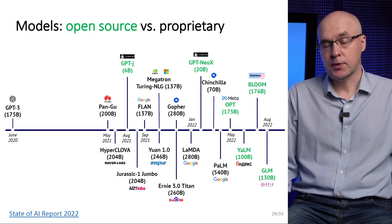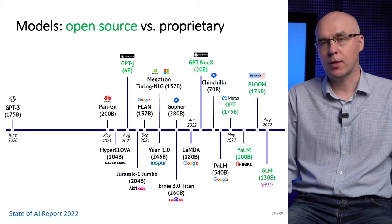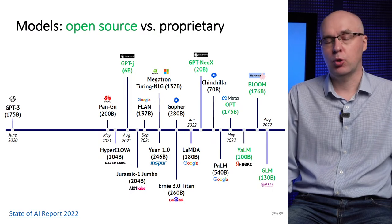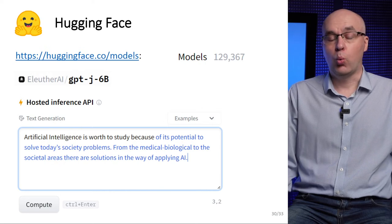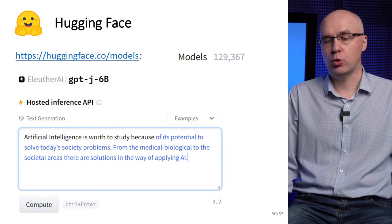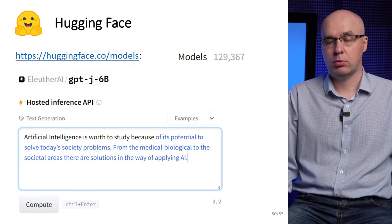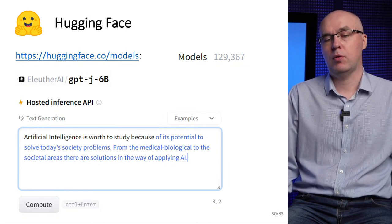However, many of today's language models are so large that they cannot be run in most university laboratories, not to mention the computers of individual researchers. One of the largest and most famous resources on which open-sourced models are released is the Hugging Face website. At the beginning of February 2023, the resource contained about 130,000 models.